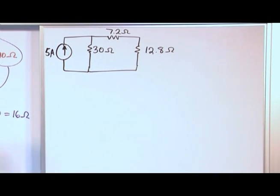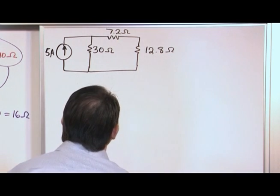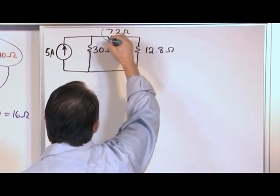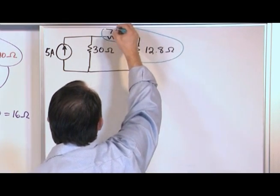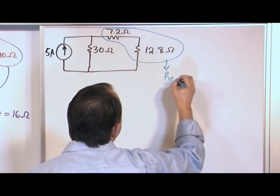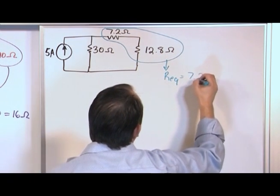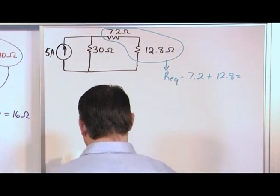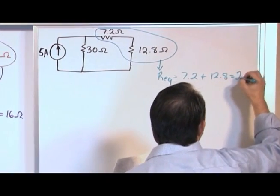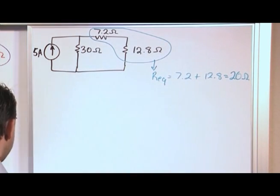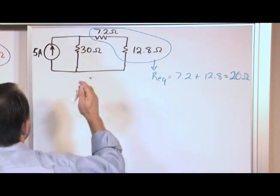All right? So, now we look at what we have, and we say, oh boy, I see something else I can do. Now, I have this resistor in series with this one, so I can definitely do this, so let me just write a note to myself. Equivalent resistance is 7.2 plus 12.8, which is equal to 20 ohms. So, this series combination reduces to 20 ohms.